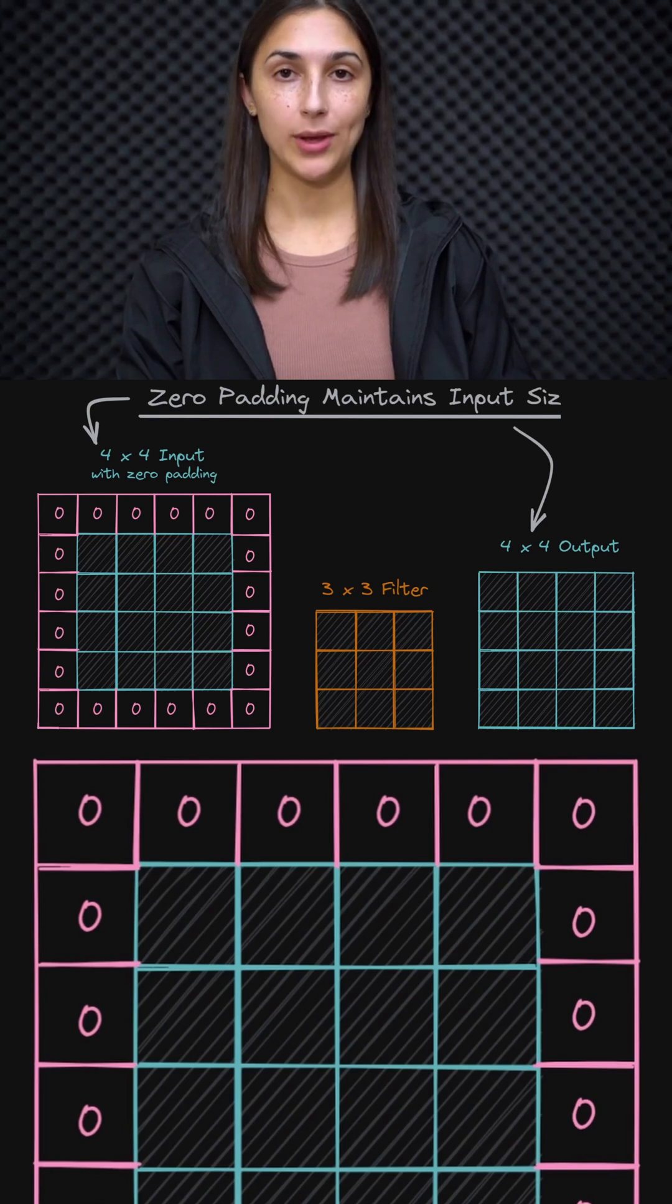Since we've padded the input with zeros, once the convolutional filter reaches the edge of the original image data, it still has a border of zeros that it's able to move towards and traverse with the convolution operation. This leads to no loss of the actual image data that is around the edges of the underlying input.